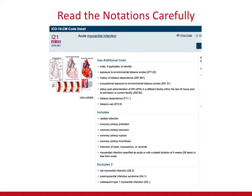You'll see I-21, acute myocardial infarction, and — what's really cool about Select Coder — you have illustrations so you can actually see what they're talking about. You have 'use additional code' circumstances, your includes notations, and an excludes 2 notation. You always need to read these notations. This is the code set directing you and giving you instructions to determine an accurate and valid code. Read carefully, then determine based on the documentation what is applicable to this particular patient and what may not be.